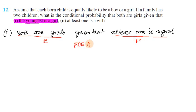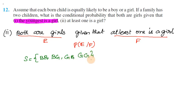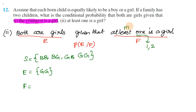We have two children, so the sample space is: boy-boy, boy-girl, girl-boy, girl-girl. Event E is 'both are girls': outcome GG. Event F is 'at least one is a girl' — meaning minimum one girl, maximum two girls.